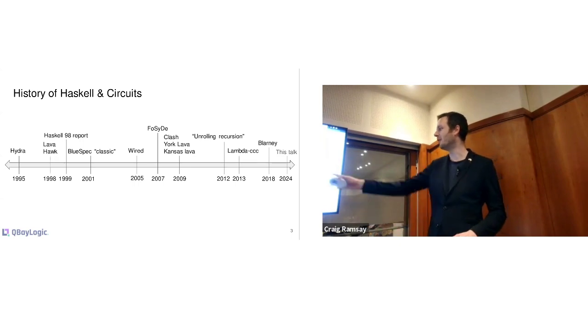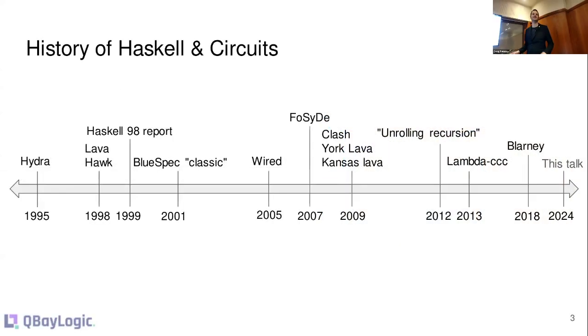I think Blarney, which we see here at the way of 2018, calls itself part of the Lava family, which was a series of ways of describing hardware in Haskell. And it actually originated before the Haskell 98 report came out, which many people don't even consider anything before Haskell 98. So that came out in 99 and Lava and Hawk came out in 98. They've been closely worked closely together.